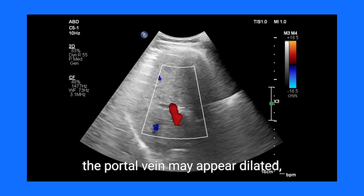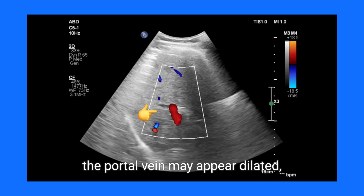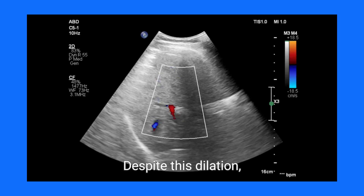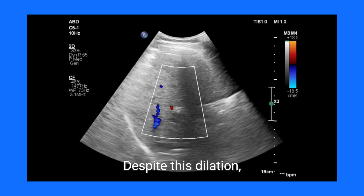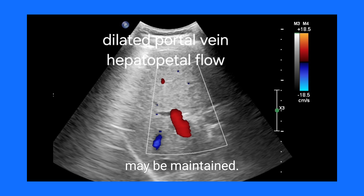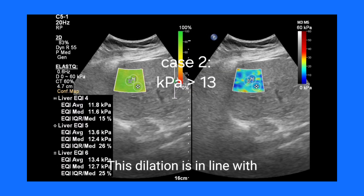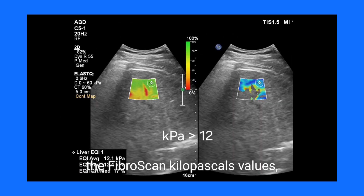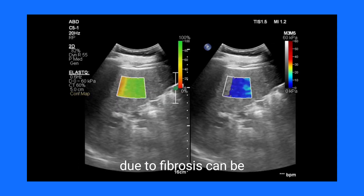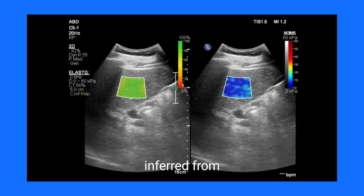Moving on to the blood vessels within the liver, the portal vein may appear dilated, measuring 14 millimeters or more. Despite this dilation, the flow of blood towards the liver — known as hepatopetal flow — may be maintained. This dilation is in line with the FibroScan kilopascal values, as increased portal pressure due to fibrosis can be inferred from both the ultrasound and elastography findings.